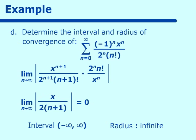So we've checked all kinds so far: one where the interval was between two finite numbers, one where the radius was 0 with convergence only at x = 0, and this one where the radius is infinite.